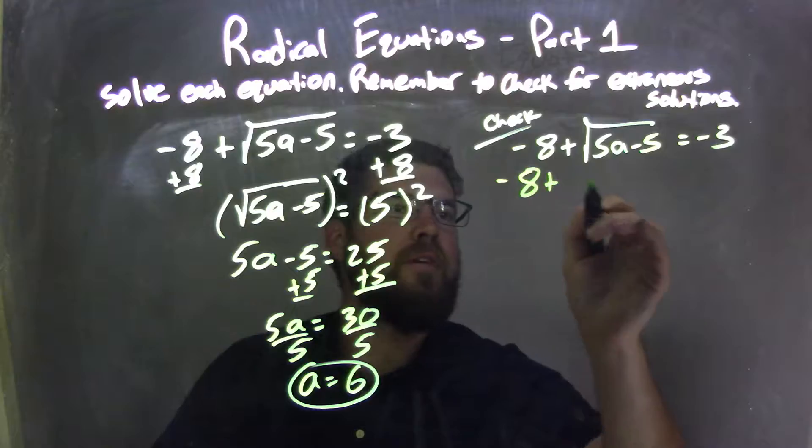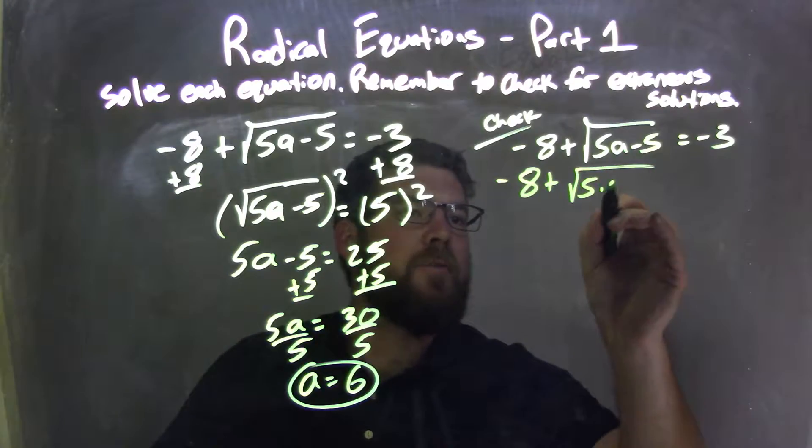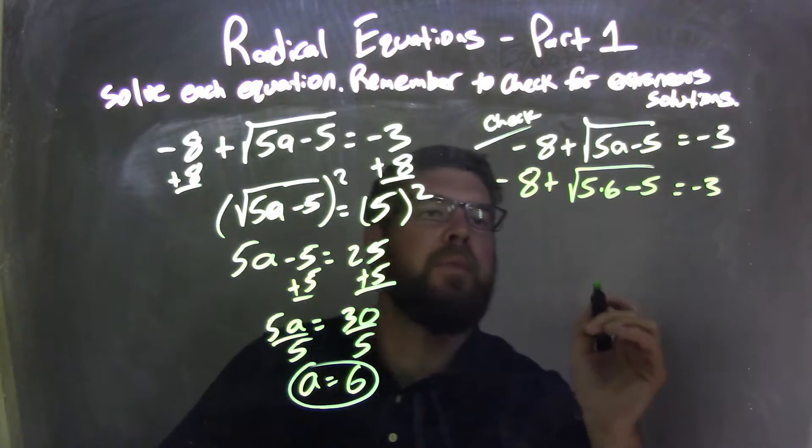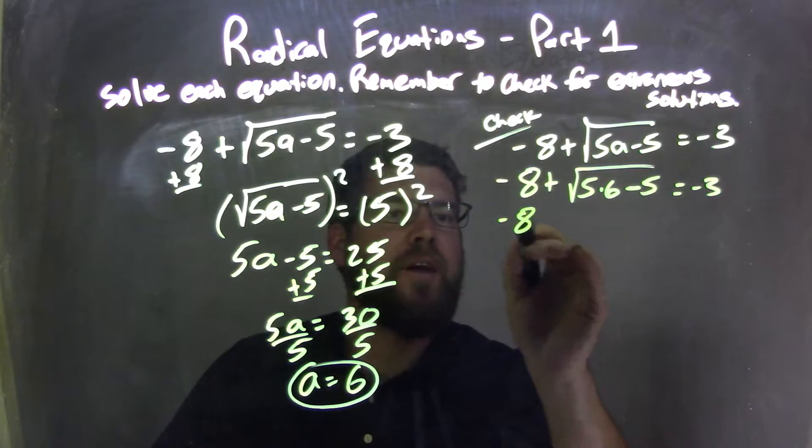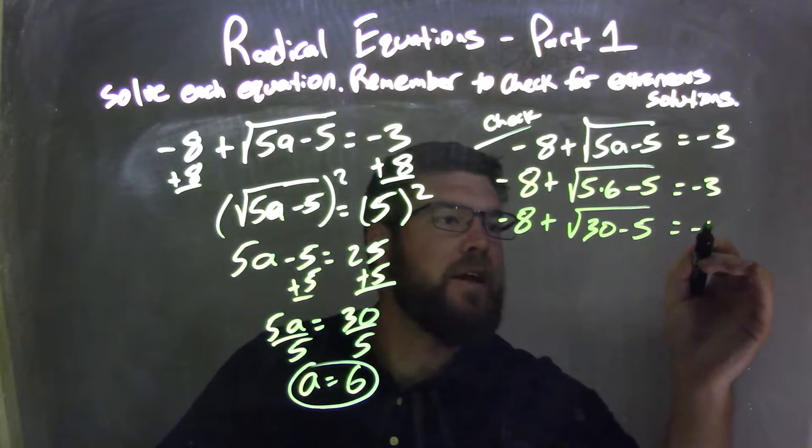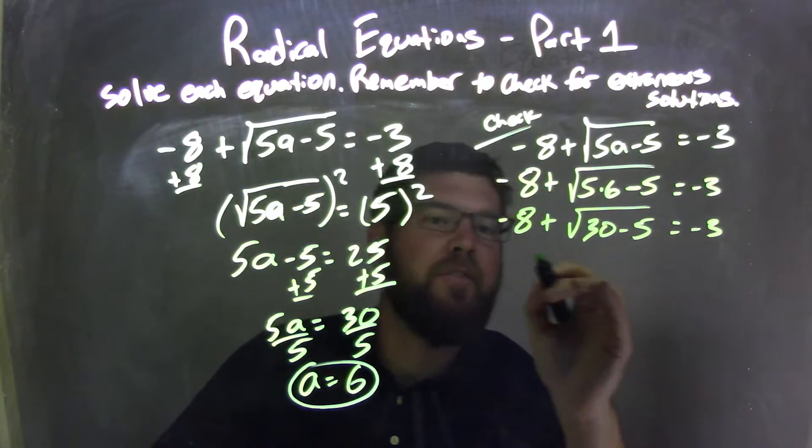I have negative 8 plus the square root of 5 times 6 minus 5 equals negative 3. Well, 5 times 6 is 30. So negative 8 plus the square root of 30 minus 5 equals negative 3. 30 minus 5 is 25.